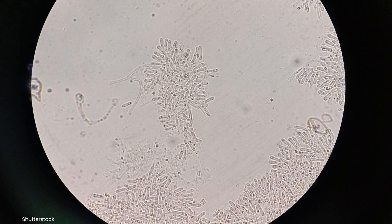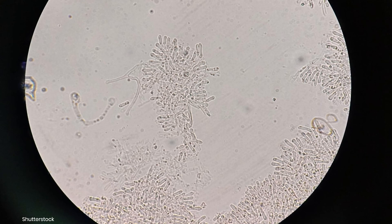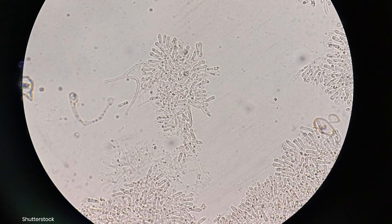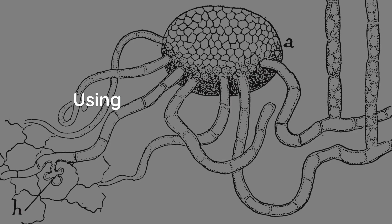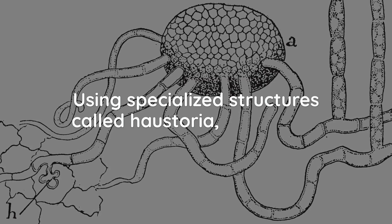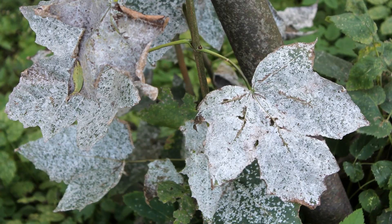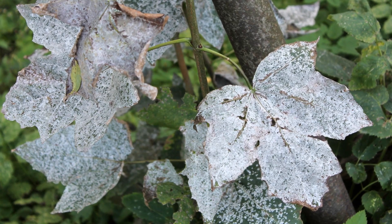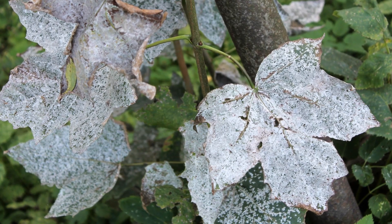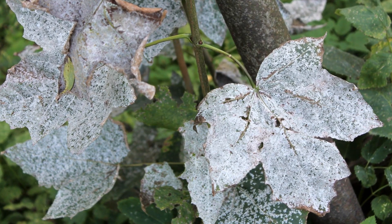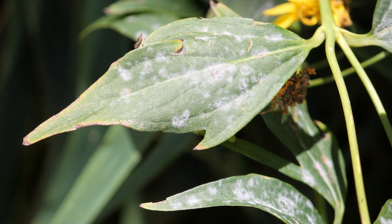After germination, the fungal spores produce thread-like structures called hyphae. These hyphae penetrate the plant's outer tissue but not the deeper cells, as powdery mildew is an obligate parasite. Using specialized structures called haustoria, the fungus siphons nutrients from the host plant to fuel its growth. As the fungus colonizes the plant, it produces more spores on the surface of the infected tissue. These spores form the characteristic white, powdery coating that gives the disease its name. In the early stages, the disease typically begins as small, white or gray powdery spots on the upper surfaces of leaves.